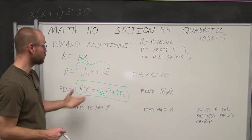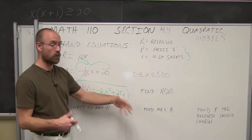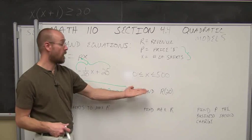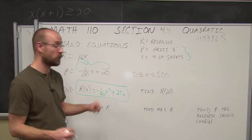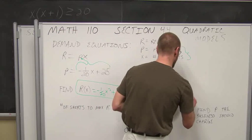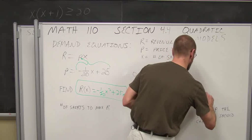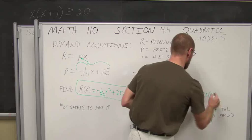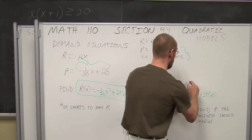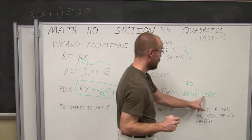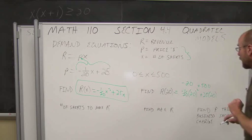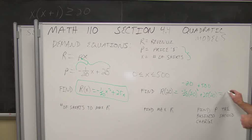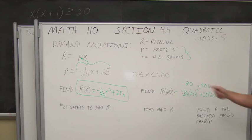This is my revenue equation in terms of x — if I sell this many shirts, this is how much money I'll make. The next part asks: if I sell 20 shirts, how much revenue will we have? I evaluate the function at x = 20: negative 1/20 times 400 plus 25 times 20, which gives negative 20 plus 500, for a revenue of $480.